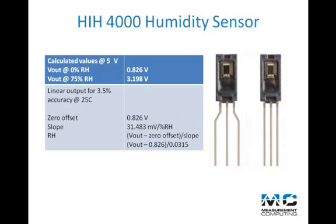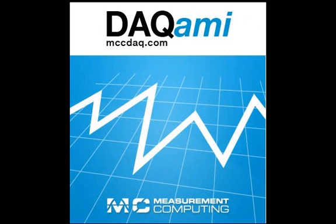And by simply attaching some leads to the sensor and pairing it up with our low-cost USB-201, you can have a humidity monitoring DAQ device for around $120, plus the cost of software. Today, I'll be using DAQAMI, which lists for $49 when purchased with a compatible device like the USB-201.